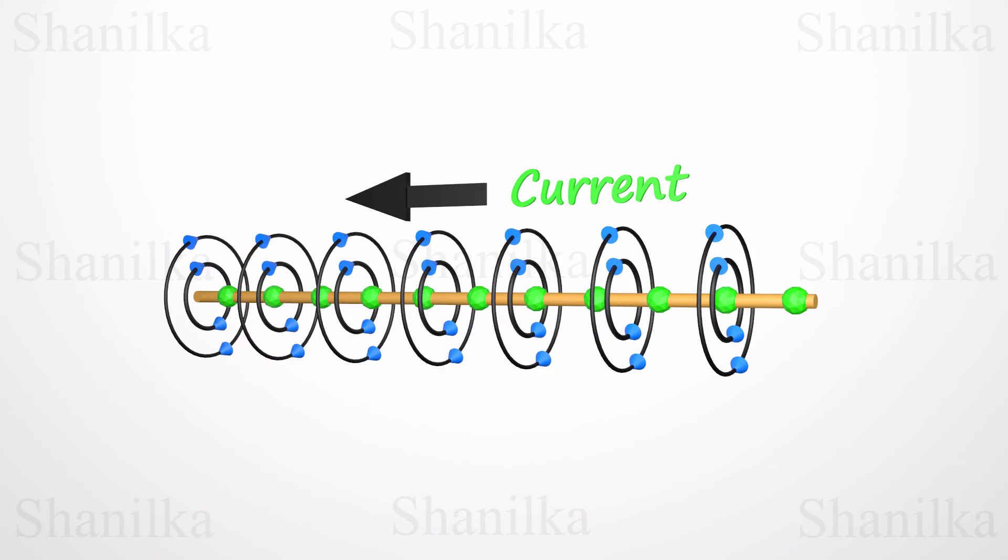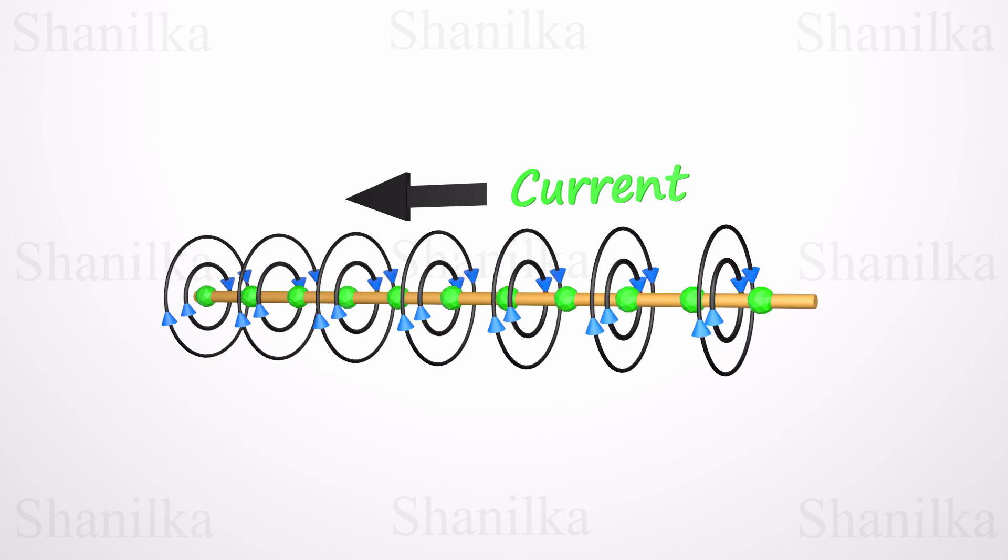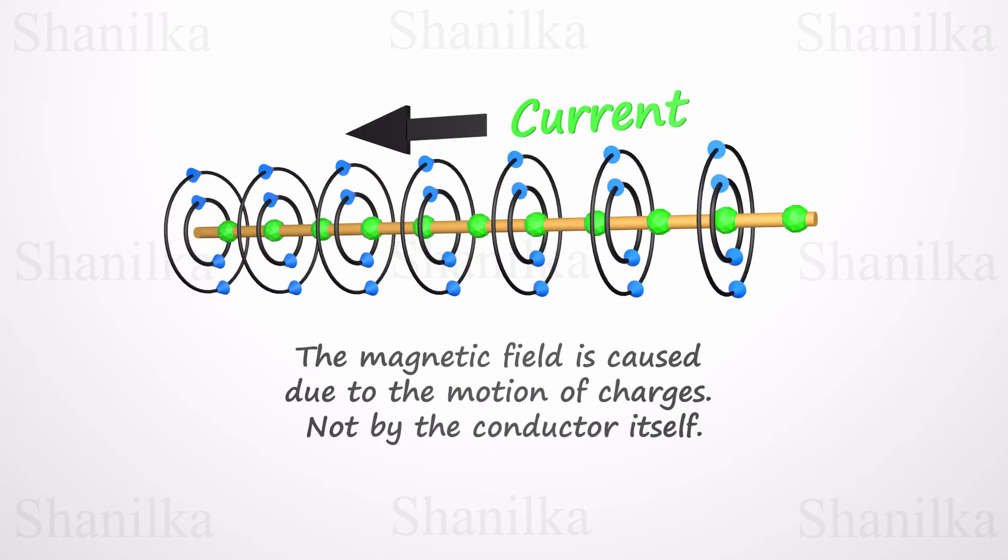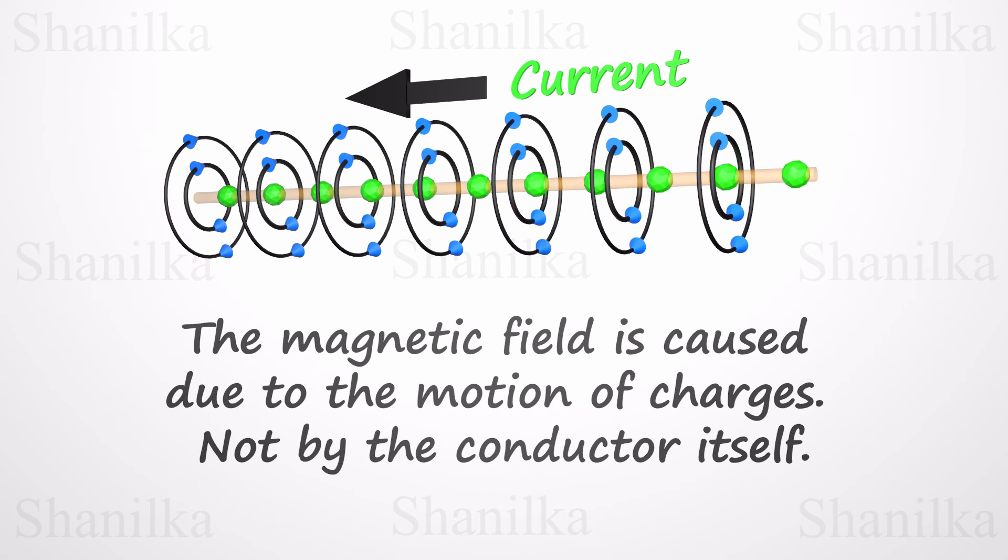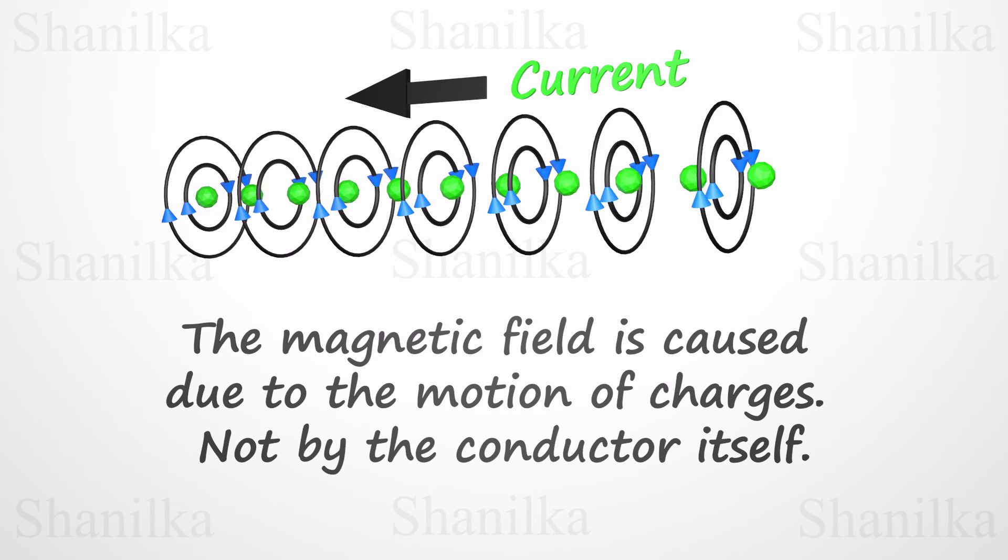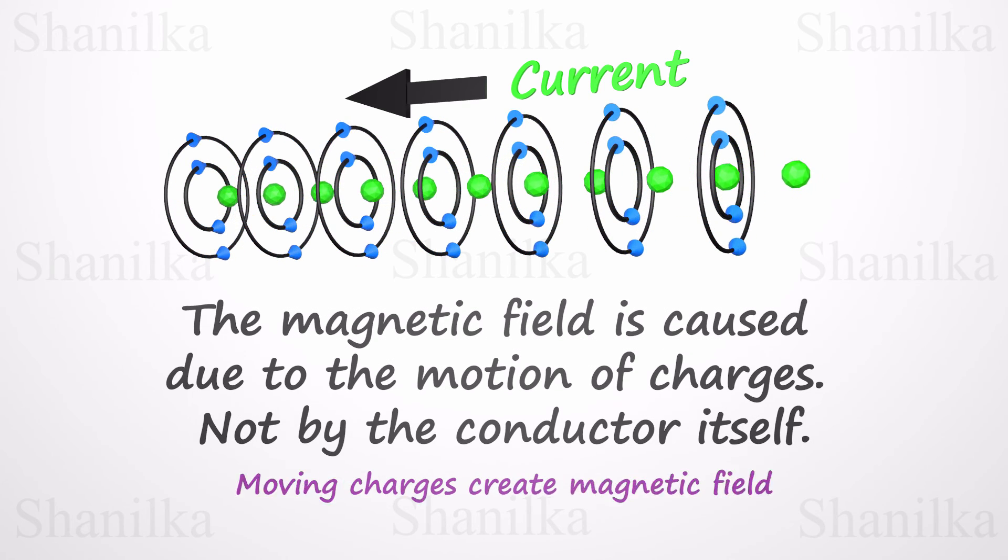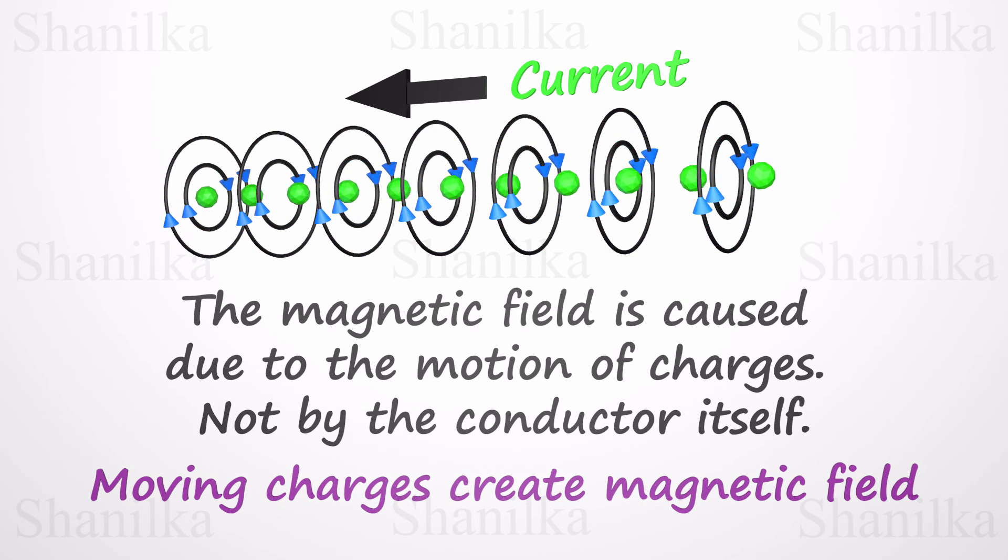In electromagnetism, the magnetic field is caused due to the motion of charges, not by the conductor itself. If somehow we move the same number of charge particles without a conductor, we can still observe the magnetic field. Actually, the moving charges create a magnetic field.